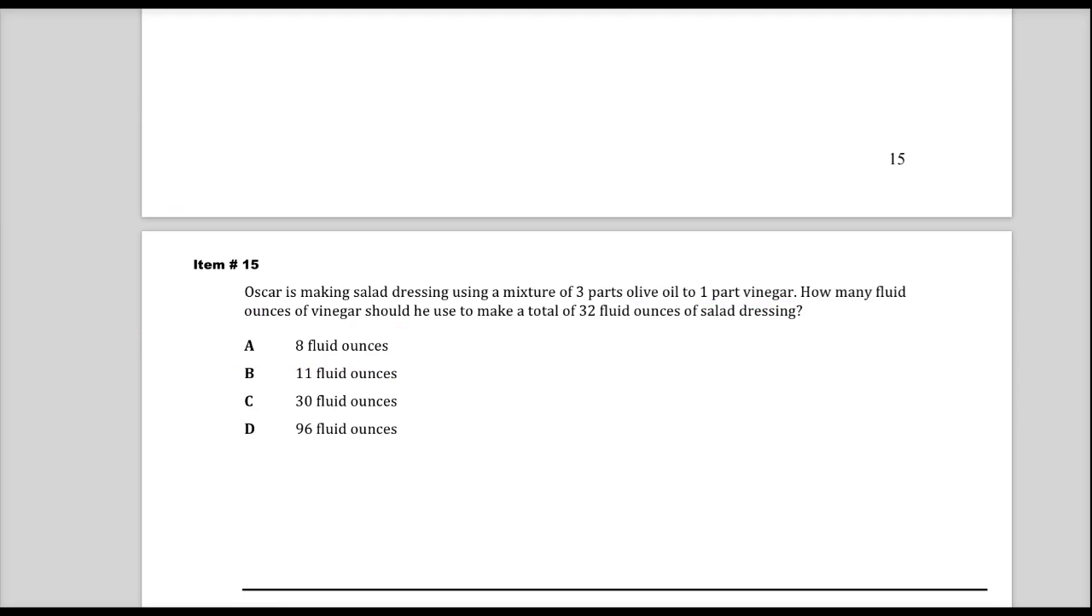What else could you do? There are other ways to look at that problem. You can think, I need to go from 4 total ounces, because it says 4 parts to 1 part. So I have 4 parts. And I need to get that up to 32 for the type I'm needing to make. So I just do times 8. If I have one part of this as vinegar, I just do times 8.